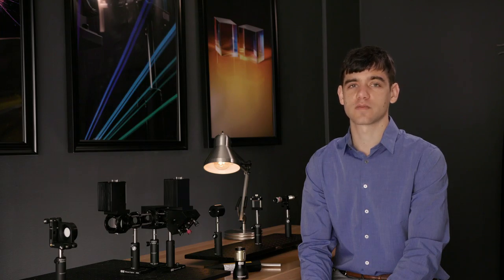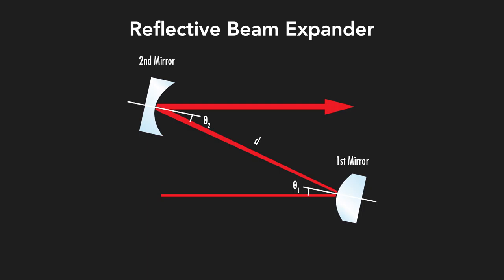Reflective beam expanders expand your beam using a series of mirrors, similar to telescope designs. The first mirror in the system is typically a convex mirror. When the light hits the convex mirror, it begins to diverge.